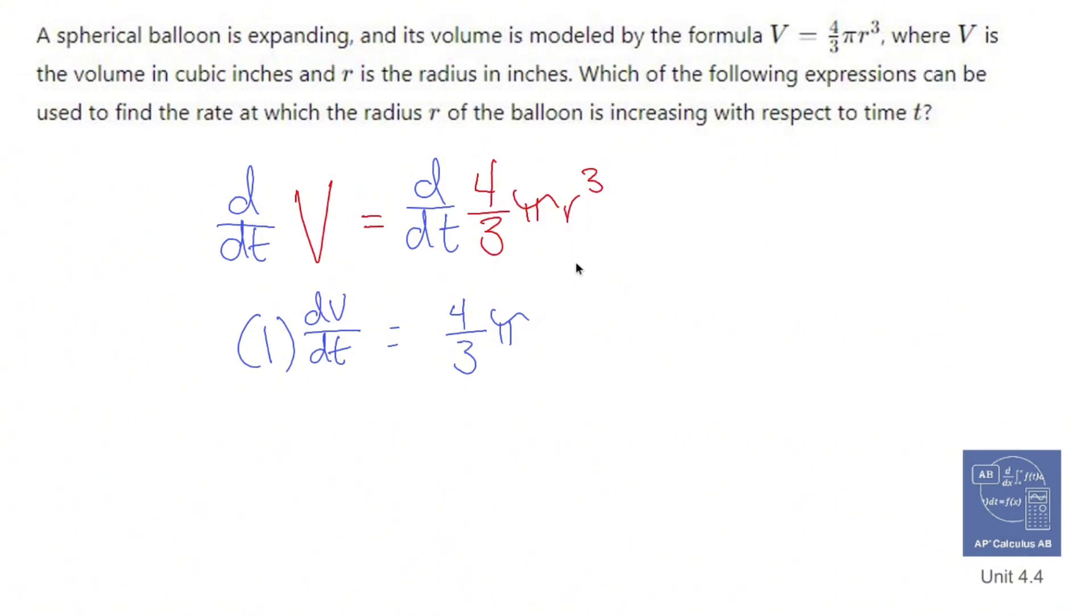The derivative of r cubed is going to be three r squared. But since we're taking the derivative with respect to t, we attach dr dt.